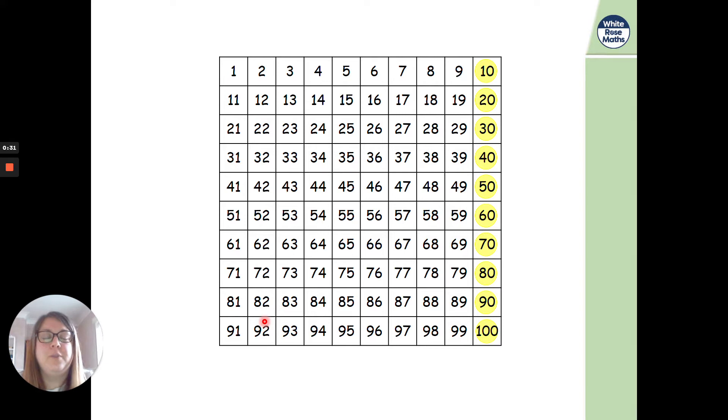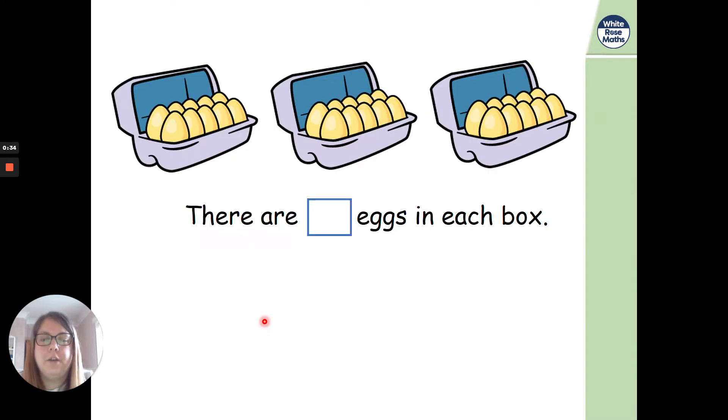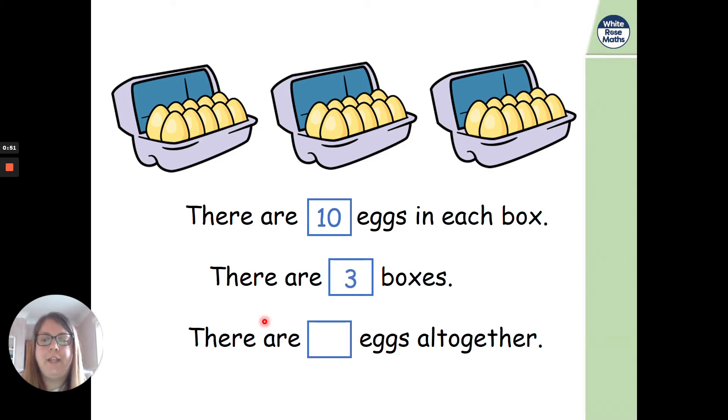And I bet you were really good at that because we've done lots of counting in 10s in school. So how many eggs are there in each box? Have a think. There are 10 eggs in each box, well done. So how many boxes are there? 3 boxes. So how many eggs are there altogether?